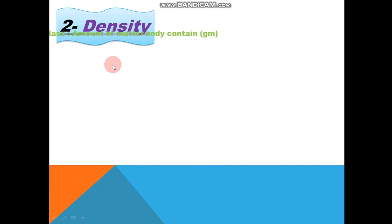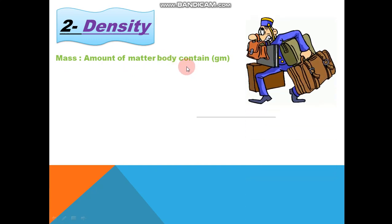Second, density. What's the meaning of density? To know density, you must study mass first. What's the meaning of mass? Mass, it's amount of matter in an object.